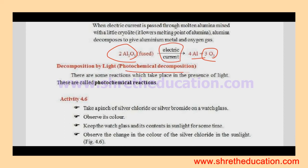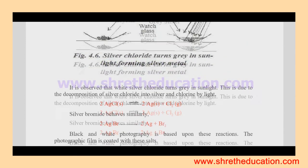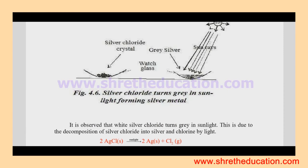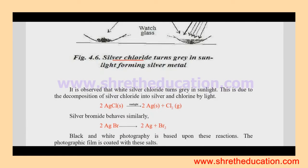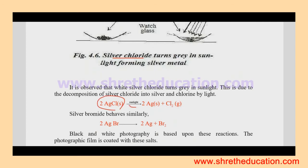Now photochemical decomposition - decomposition reactions caused by light. Some reactions take place in presence of light. For example, silver chloride: it is observed that white silver chloride turns gray in sunlight. This is due to the decomposition of silver chloride into silver and chlorine by light.